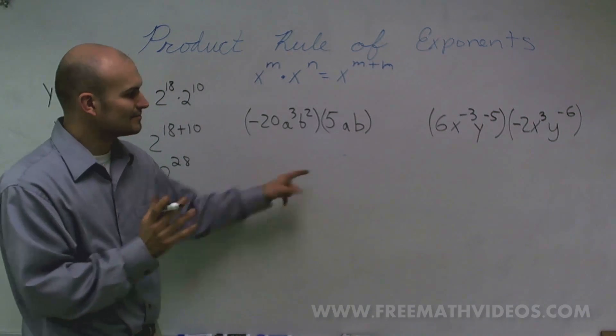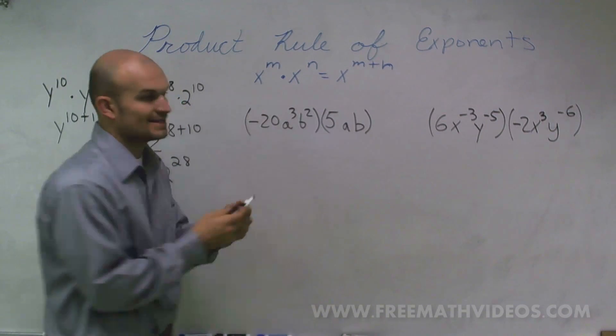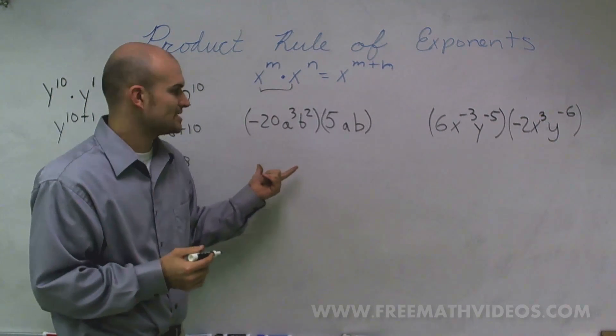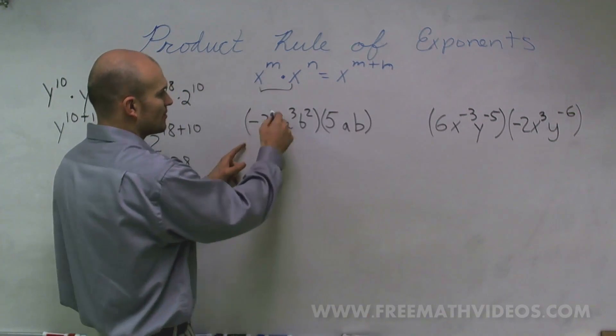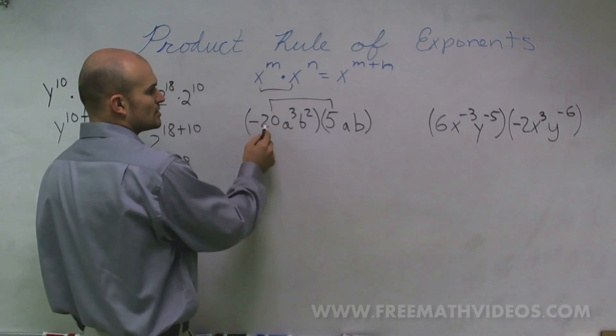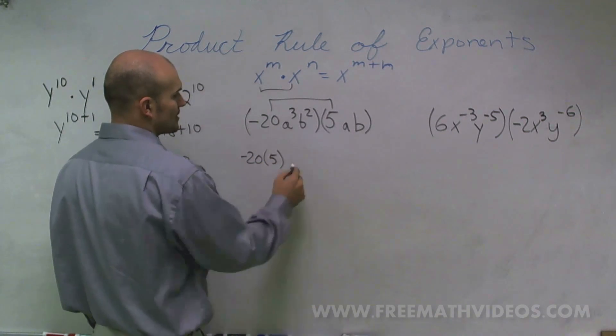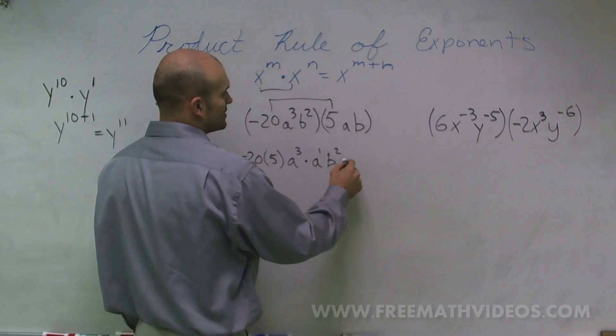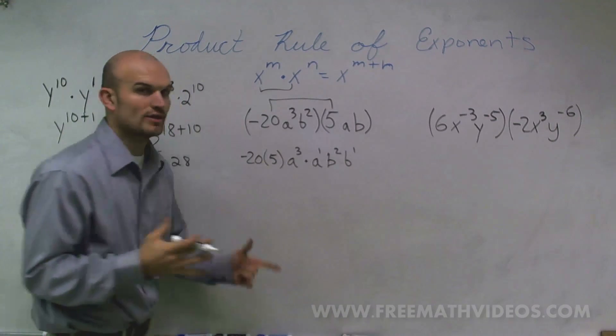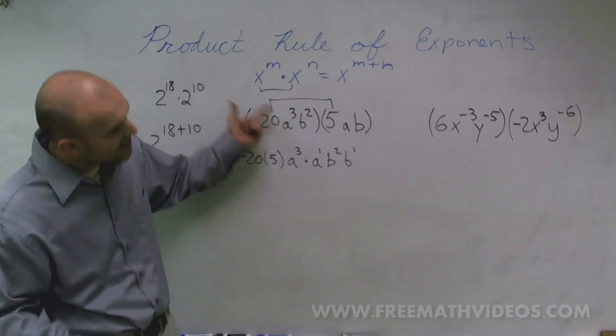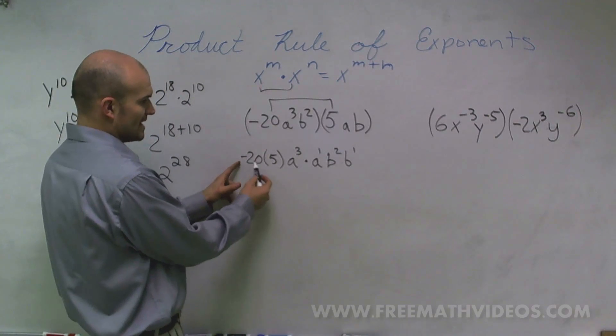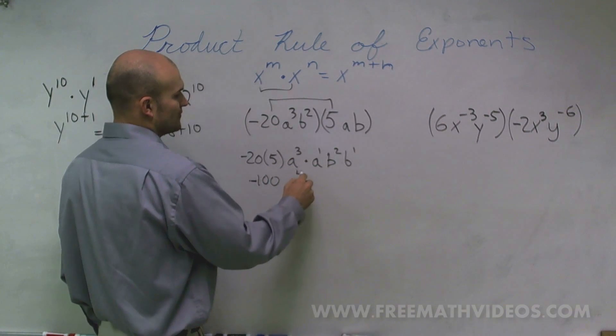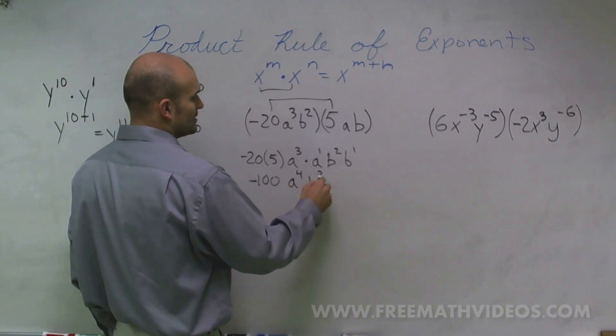Over here, I didn't give you an example of one of these, but what we can say is, remember, I did show you that you can't use your product rule of exponents when your bases are different. So therefore, I'm going to rewrite this multiplication problem with my bases that are the same. I have to multiply my coefficients, so I'll have negative 20 times 5 of a cubed times a to the first power times b squared times b to the first power. It's important to make sure that we only use the product rule of exponents when our bases are the same. Here, negative 20 times 5 is negative 100. a cubed times a to the first is a to the fourth power. b squared times b is b to the third power.